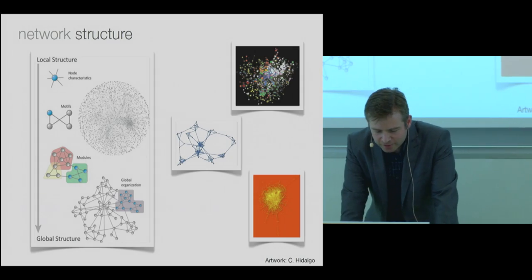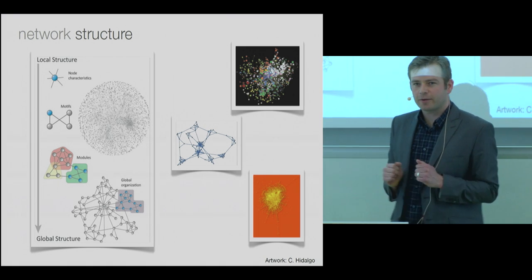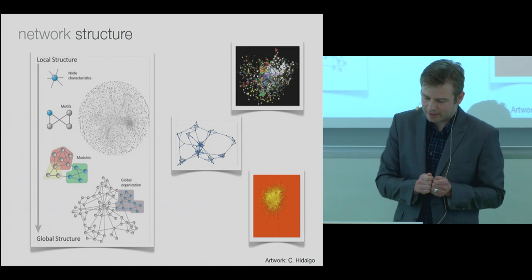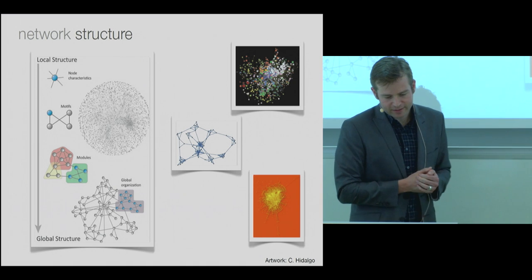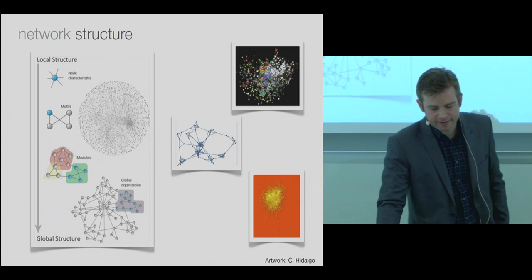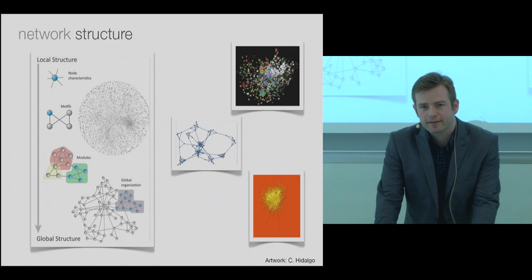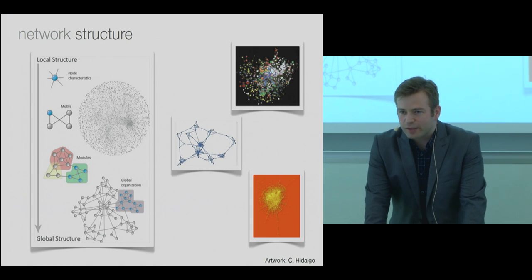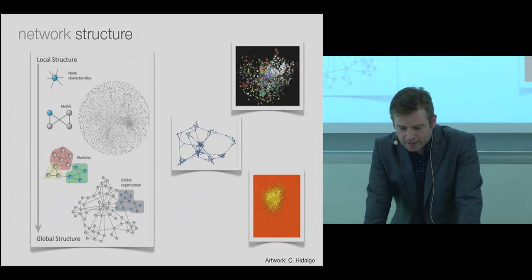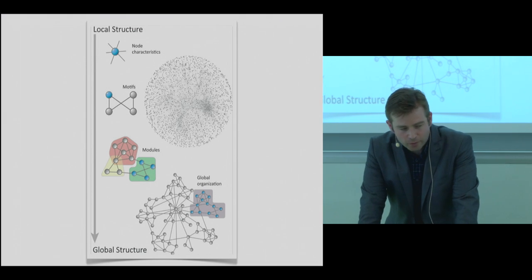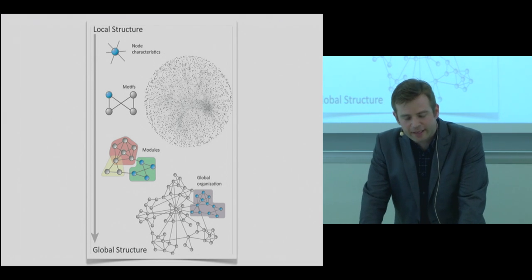So my background has to do with studying the common properties across networks, from cell regulation all the way up to the internet scale. And when I started studying these things in around 2000, we thought that we could describe them as just random networks, random connections, and it turned out that was really wrong. What we found basically was structure at every level.